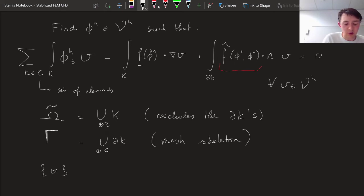So the average symbol, I denote with curly brackets, is defined as half of the values on either side. So I get half of v plus, plus half of v minus. This is going to be our average.